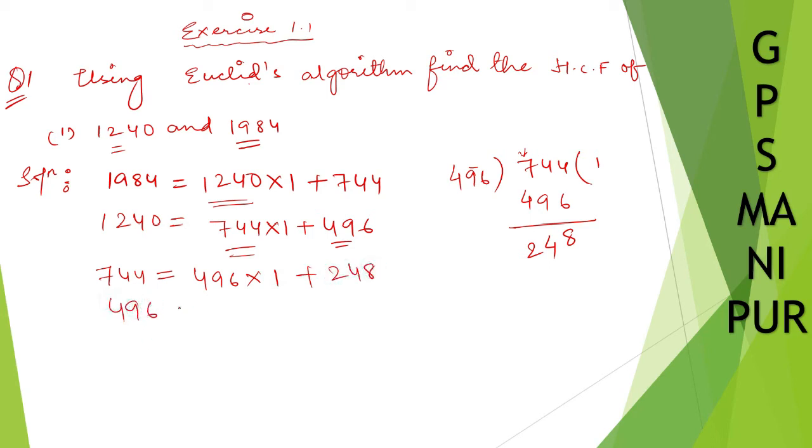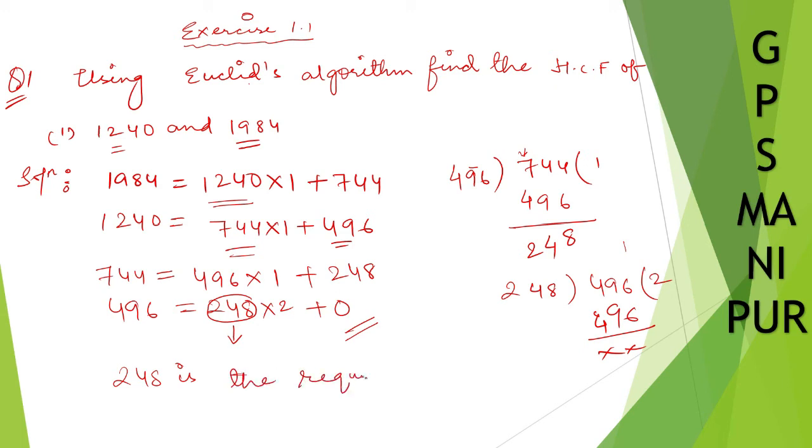Same thing now, 496 equals 248. Now you divide 248 to 496. 248 into 2 plus 0. Now by Euclid's algorithm, if the remainder is 0, then this 248 is your required HCF. So 248 is the required HCF.